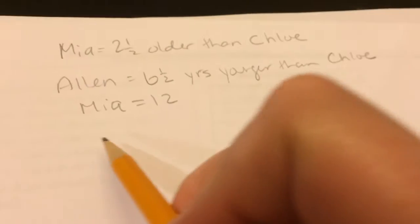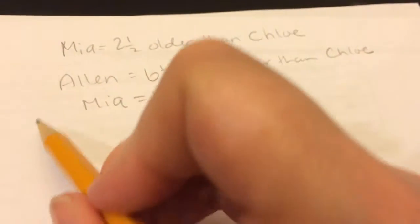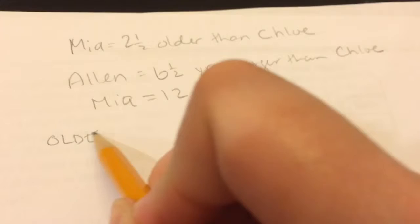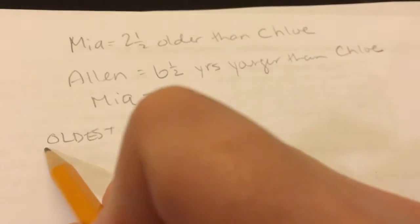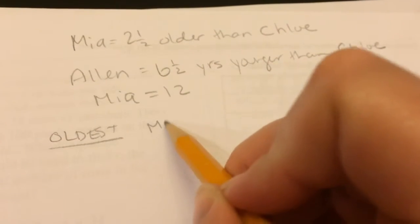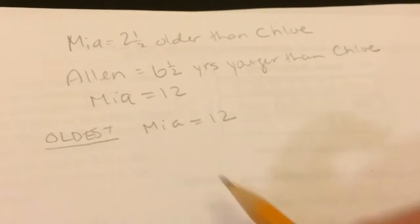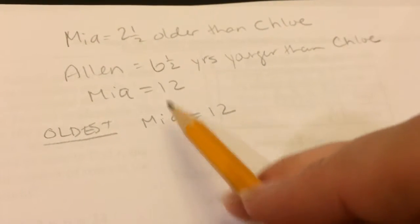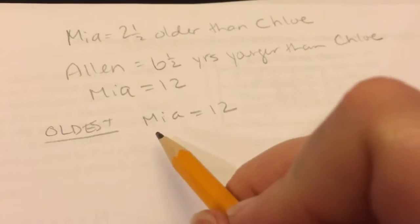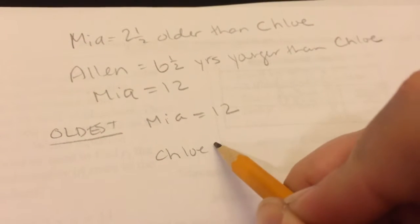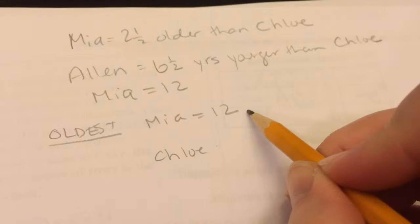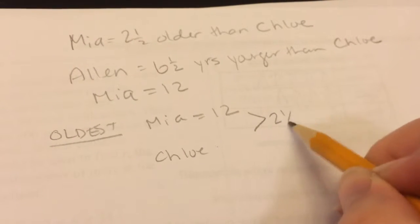So let's put them in order from oldest to youngest. I know that Mia is the oldest and she's 12. And Mia is 2½ years older than Chloe, so next would be Chloe. And that gap right there is 2½ years.